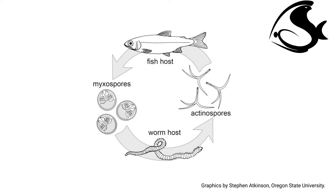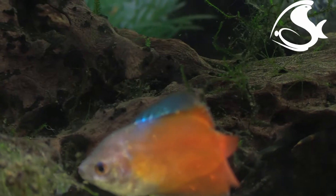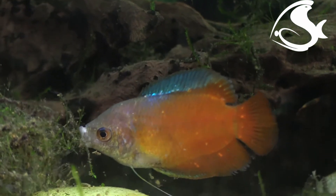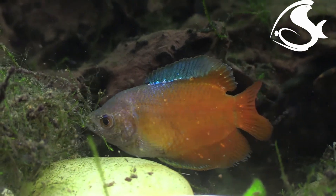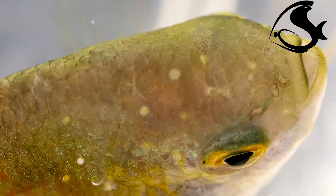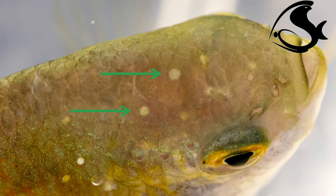Myxosporias show two-host life cycles, involving a vertebrate host and an invertebrate host — a freshwater oligochaete worm, e.g. Tubifex tubifex — where development culminates in the production of actinospores. Thus, spores released from fishes are infective for the involved invertebrate.